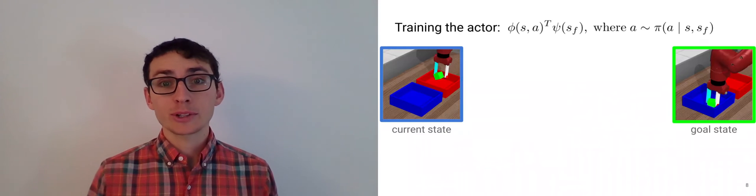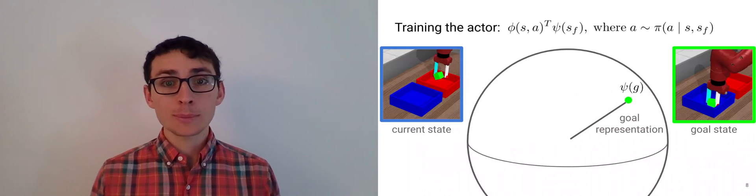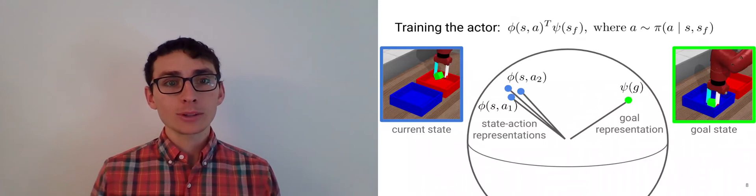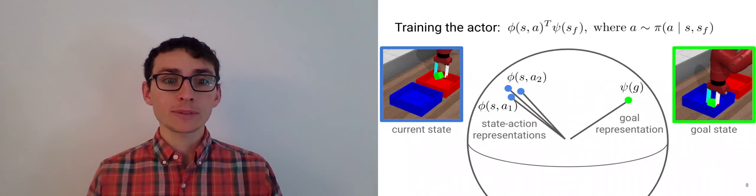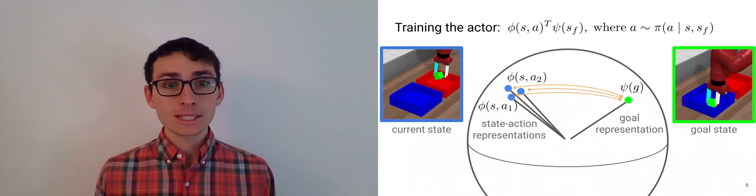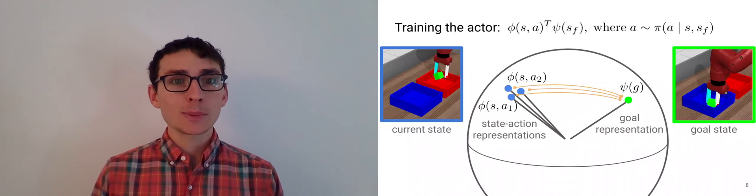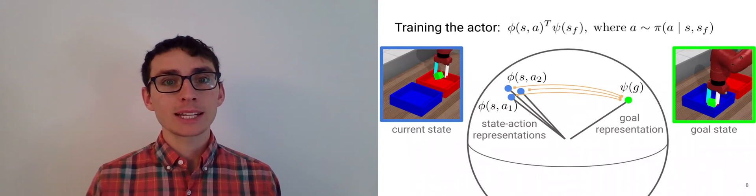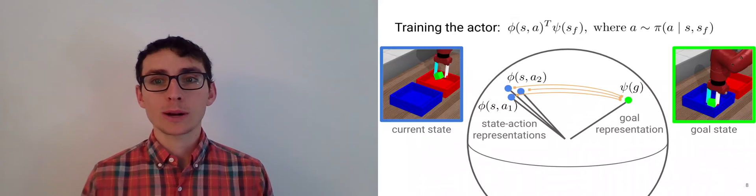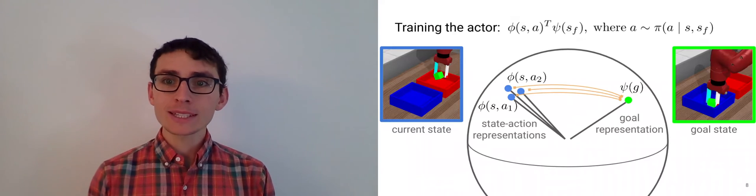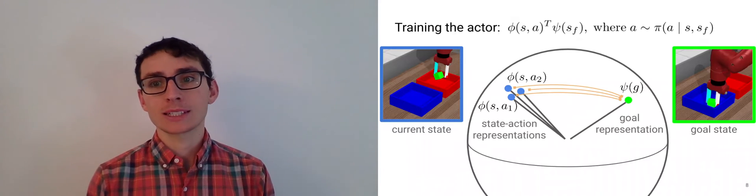Training the actor has a nice geometric interpretation. Let's think about the representation of the goal state and the representation of the current state, which might be different for different actions. If we simply look at the similarity between these representations, training the actor corresponds to choosing whichever state action representation brings us closest to the goal representation. We can think about this as doing planning in representation space.